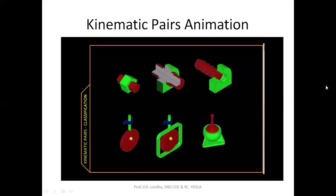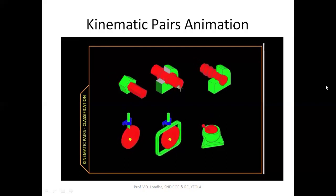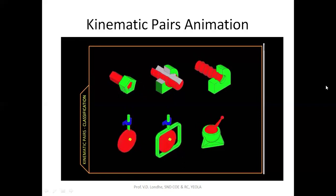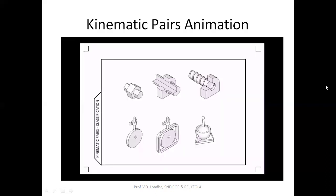In Chapter 1, Topic A, we defined a mechanism as a set of links connected with kinematic pairs that transmit and modify motion and forces. Now we will take a closer look at kinematic pairs. Here we have a collection of kinematic pairs. Any kinematic pair is made up of two bodies — shown in red and green — that are capable of moving relative to each other. One body can be considered fixed and the motion of the other body observed. Each body can then be connected to a different link, so as the two bodies move relative to each other, the two links will also move relative to each other.